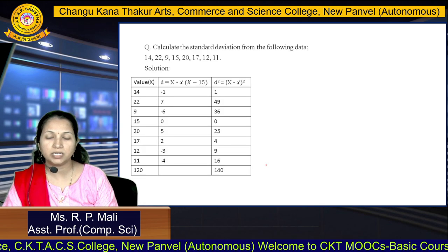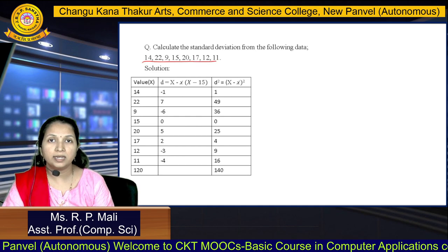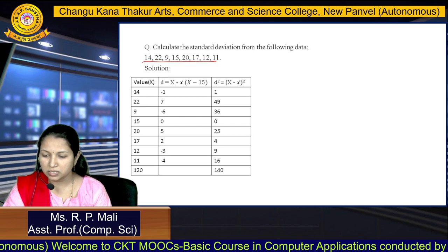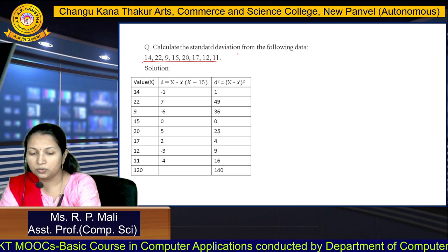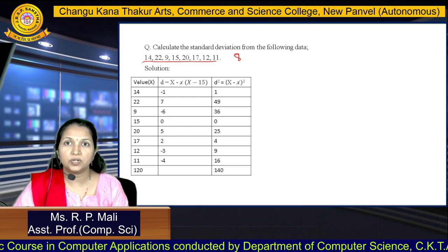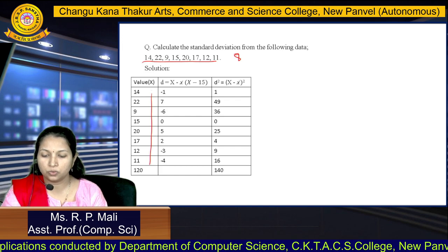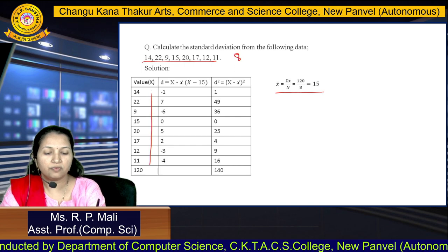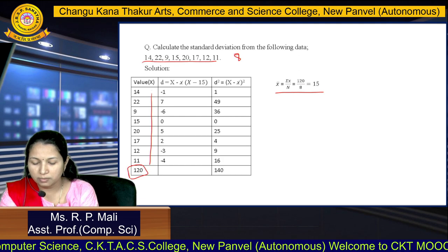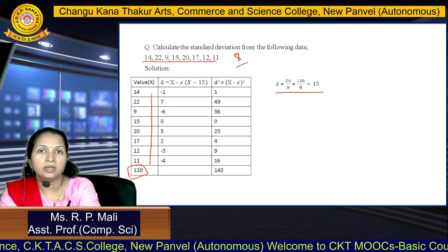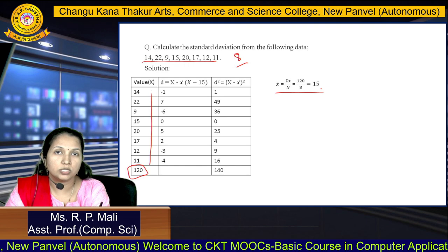We will take one example based on individual data. The values are 14, 22, 9, 15, 20, 17, 12, 11 — there are 8 observations in total. We are going to find the mean using X-bar equals summation X divided by N. The summation of this column is 120, divided by 8 observations, giving X-bar equals 15.